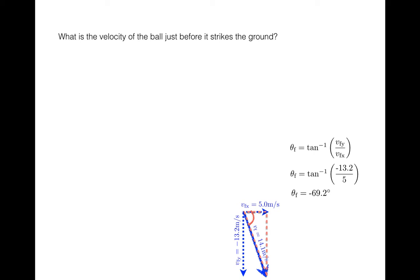So now we can go back to this question: what is the velocity of the ball just before it strikes the ground? And in fact, there are a variety of ways to represent the answer to that question. In magnitude-direction form, the answer is 14.1 m/s at 69.2° below the horizontal. In unit vector notation, you might write that vf is 5 m/s in the i direction minus 13.2 m/s in the j direction.